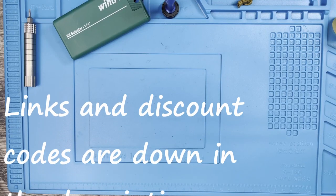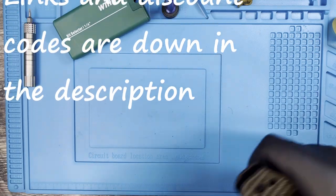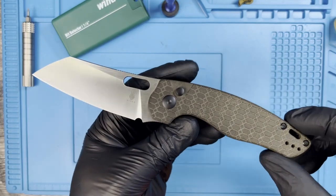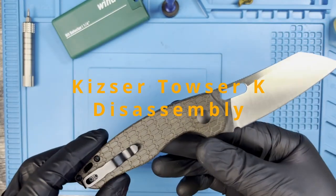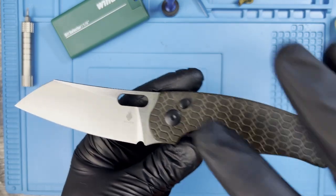What is up everyone? JD here. I hope you're all doing well. Today we're going to be doing the disassembly and maintenance of the Kaiser Tauzer K. This is the full-size one, White Mountain Knives exclusive.